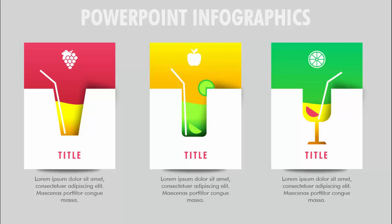In today's tutorial I'm going to show you how to create this juice posters infographic slide in PowerPoint. As you can see, I have created three different juice posters with icons to identify grape, apple, and lime. I've put the straws in different colors, and when you click, the juice has some liquid movement animation.